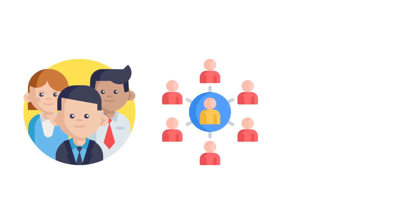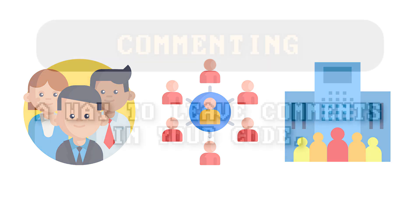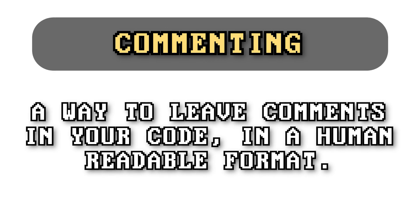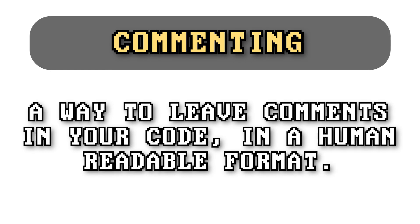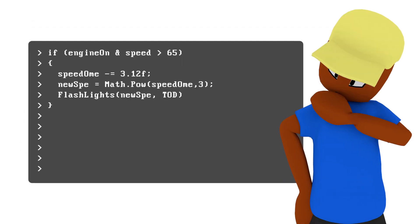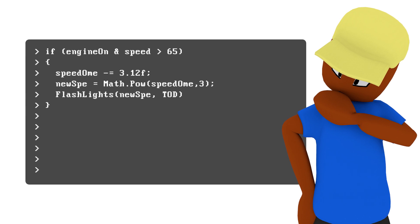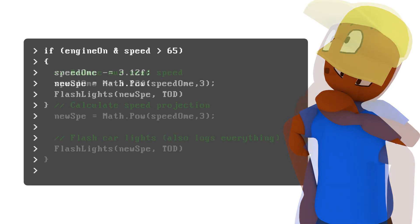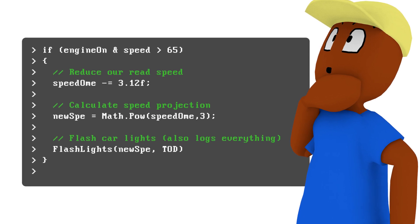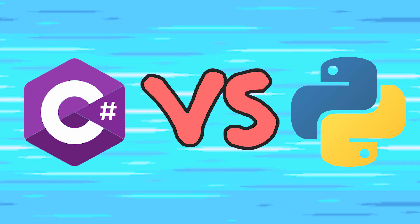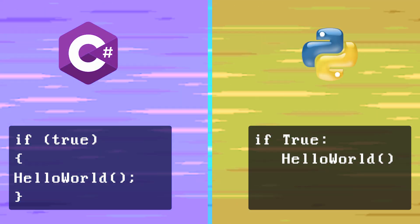Commenting can be a make or break for your coding success, especially if you're working on a team, on an open source project, or on a project you plan to work on long term. Comments are a way to leave notes within your code in a human readable format so that you know what's going on in different parts of your code at all times. Sometimes you'll write extremely complicated code that makes perfect sense in the moment, but when you return to it months later or give it to someone else, it may be really difficult or a ton of wasted time trying to reverse engineer the code.